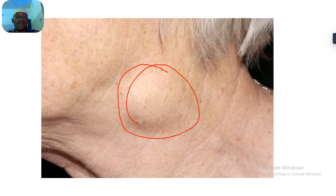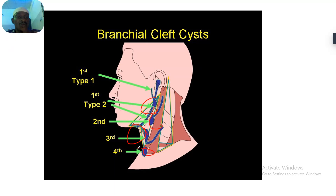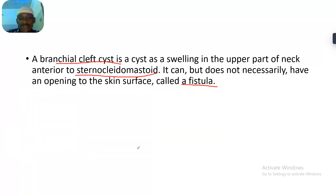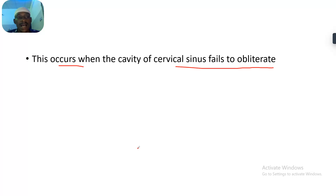These are branchial cysts shown at different levels: type one, type two, type three, and type four. From your knowledge of anatomy, you should be able to determine which levels these correspond to. With that, we are done talking about the branchial cyst. See you in the next tutorial — do subscribe to our YouTube channel.